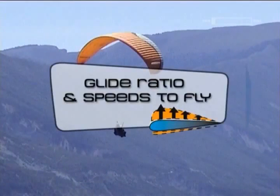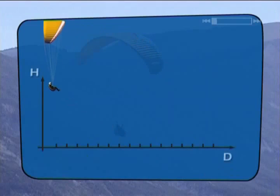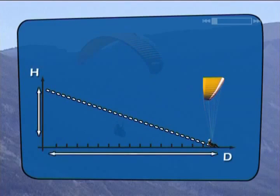They are simply ratios that measure the glide capability of your wing. These ratios are obtained by dividing the horizontal distance covered by the vertical distance lost. In this example,